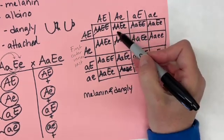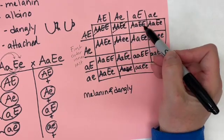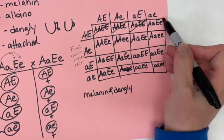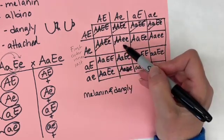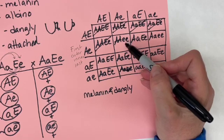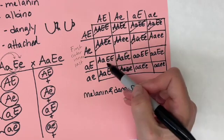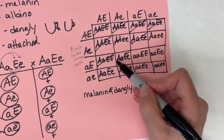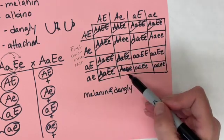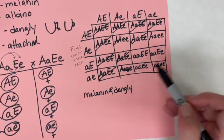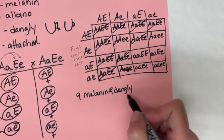So this one is one individual that has melanin and dangly ears, and we're just going to look at each individual going along the way. This individual has melanin and dangly ears—two melanin and dangly ears, three melanin and dangly ears, four, five—oh not that one, that one has attached earlobe so we're going to skip over that one. Six, not that one, seven, eight, nine. Remember that mistake I almost made? That's little e little e right there. So there were nine of them, nine melanin and dangly earlobes.